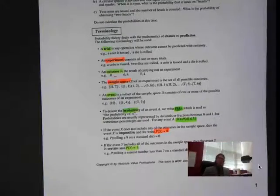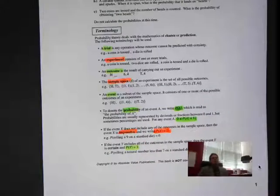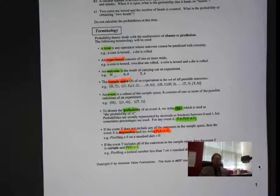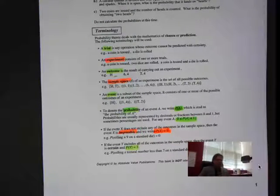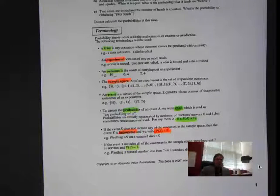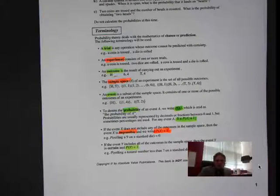If the probability is equal to zero, that is an impossible outcome — it cannot happen. An example would be rolling a seven on a standard six-sided die. What is the probability of that? It's impossible — there is no seven.